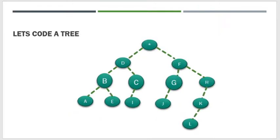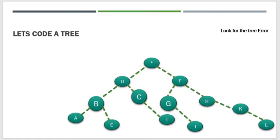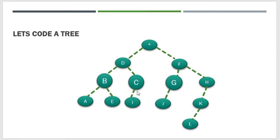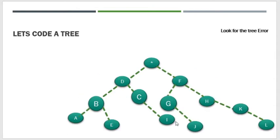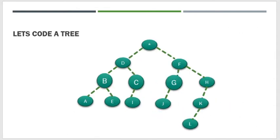Ito yung magiging sample output natin — ito yung tamang tree kapag inayos na natin. Makikita ninyo, naayos na siya by level — pantay-pantay na siya kung anong level siya, mas madali na siyang intindihin. Naayos na rin natin yung rule na pag iisa ang node, kailangan nasa left — nasa left na siya. Ibig sabihin, itong tree na to ay tama na. Nabuo na natin yung tamang tree.